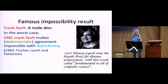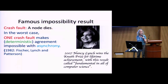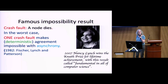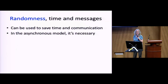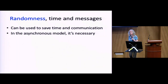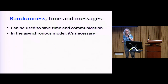There's a famous impossibility result due to Nancy Lynch, who won a Knuth Prize for it, considered fundamental in all of computer science. It says that even if the only fault is one faulty processor that crashes, there is no deterministic algorithm possible in an asynchronous system. This shut down a lot of research in getting asynchronous algorithms. However, people switched to randomness — randomness is used to get around that impossibility result, and also to save time and communication even in the synchronous model.